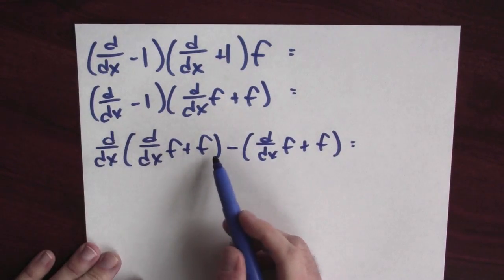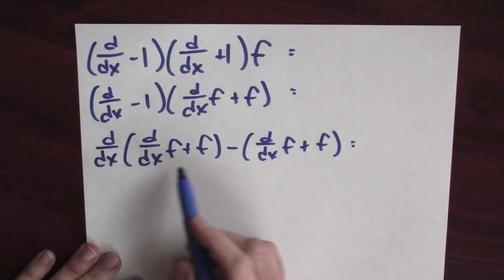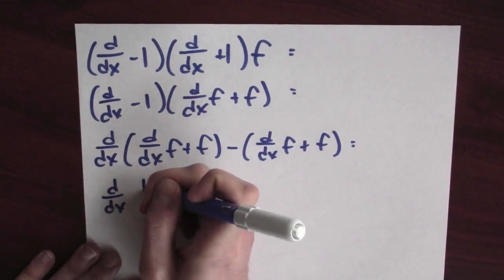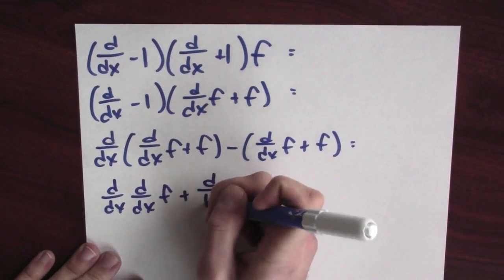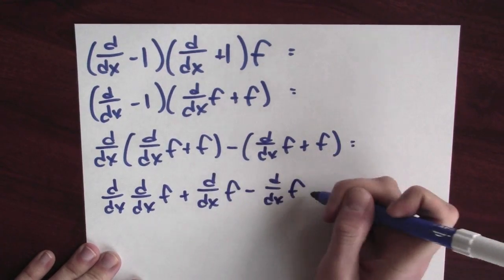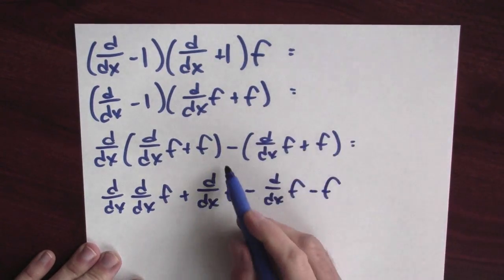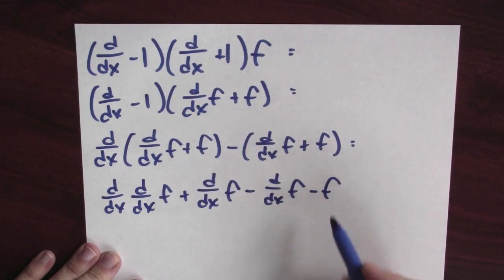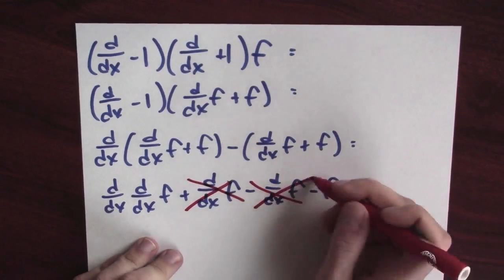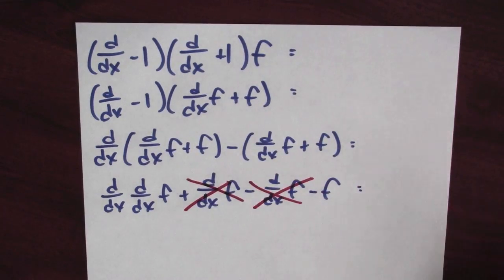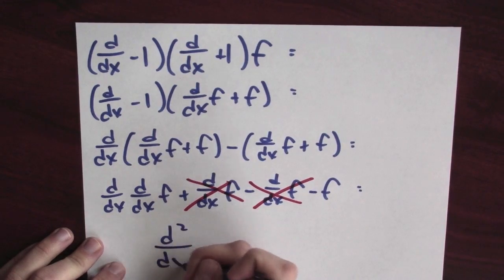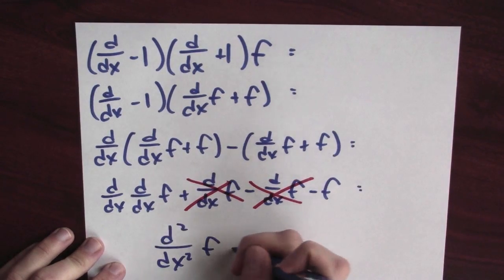The derivative of the derivative of f plus f. Well, the derivative of a sum is the sum of the derivative, so that makes sense. That's the derivative of the derivative of f plus the derivative of f minus the derivative of f minus f. I'm subtracting, summing f, so it's subtracting f. Now, good news. I've got a plus derivative here and a minus derivative of f there. So what I'm left with is d/dx, d/dx of f, which I could write as the second derivative of f minus f.